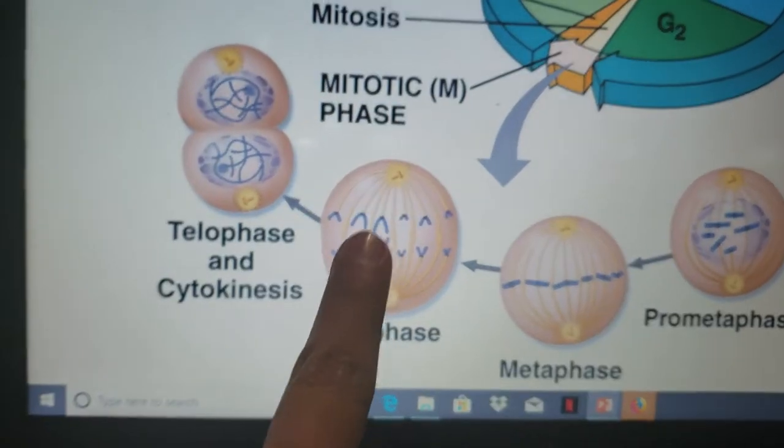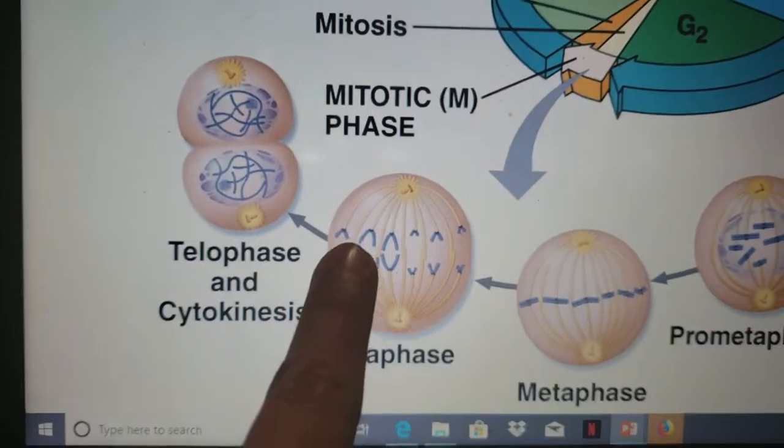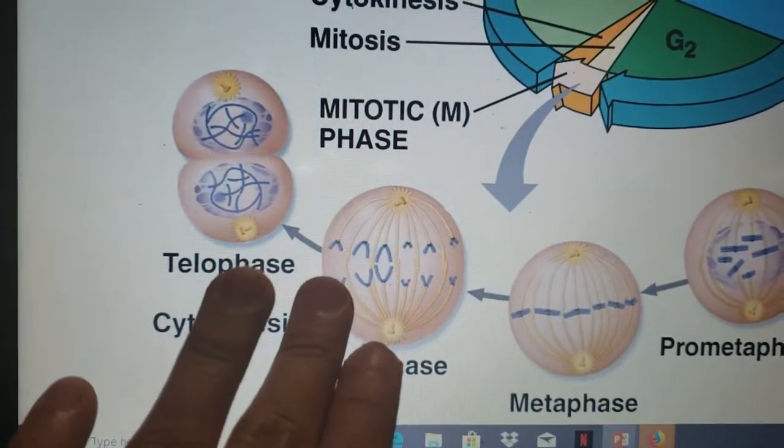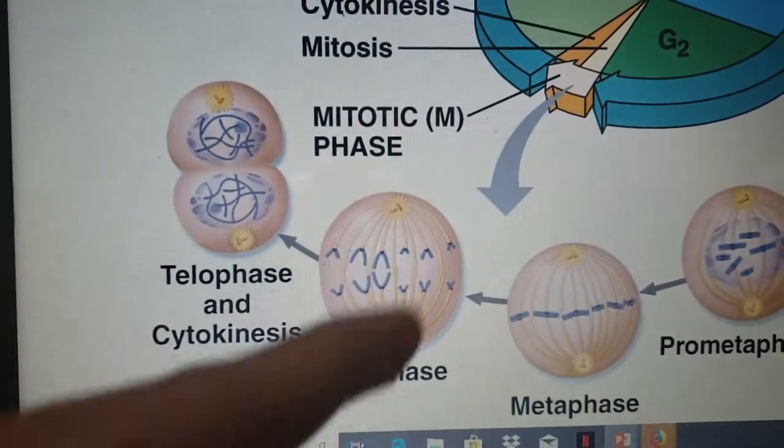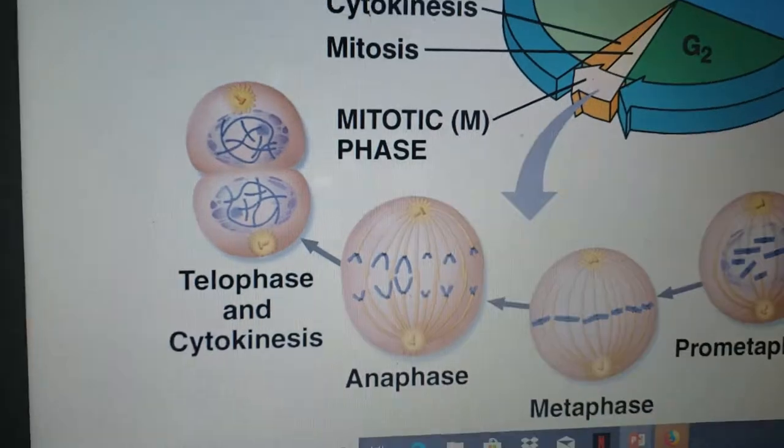In anaphase, we have another checkpoint. If the chromosomes are not attached correctly to the kinetochore spindles, the cell will die and will not move towards telophase and cytokinesis.